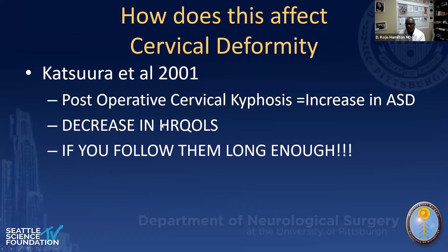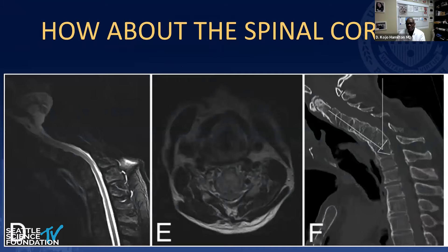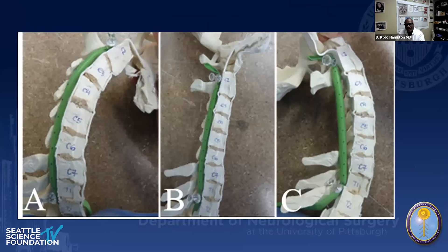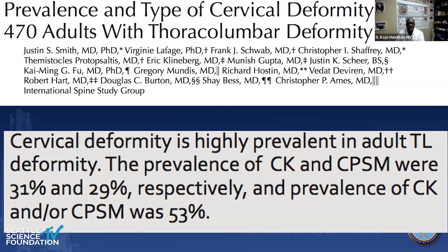Postoperative cervical kyphosis increases spinal deformity and decreases HRQLs if you follow patients long enough. New studies have shown increased myelopathy and stretch associated with cervical kyphosis and deformity, and post-surgical kyphosis does increase myelopathy. There are also new studies about how that can be corrected. In patients who have pre-existing thoracolumbar deformity, there is a high prevalence of cervical kyphosis and cervical positive sagittal malalignment.